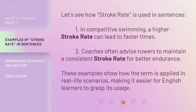Let's see how stroke rate is used in sentences. 1. In competitive swimming, a higher stroke rate can lead to faster times. 2. Coaches often advise rowers to maintain a consistent stroke rate for better endurance. These examples show how the term is applied in real-life scenarios, making it easier for English learners to grasp its usage.